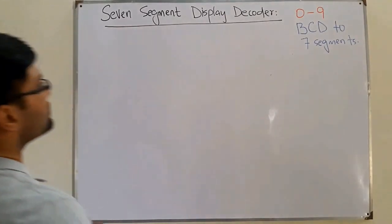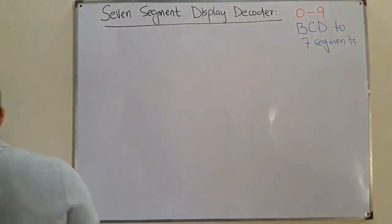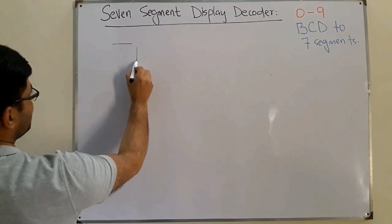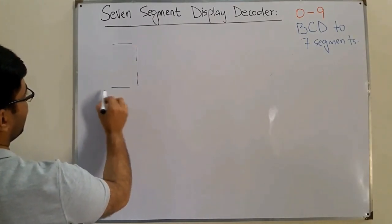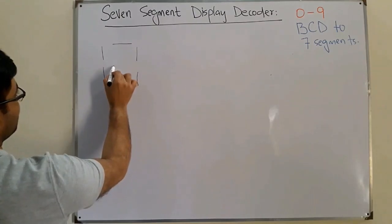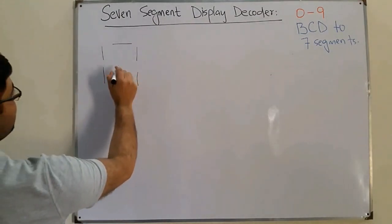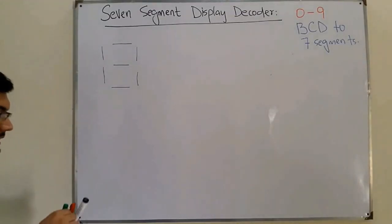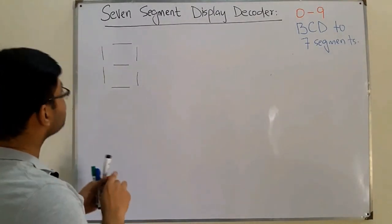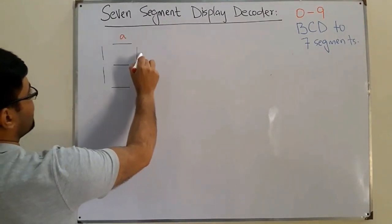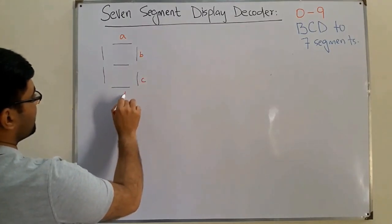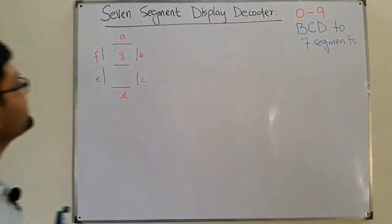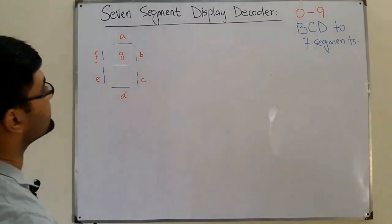Let me show you the seven segments. We have one, two, three, four, five, six, and seven — these are the seven segments of this seven segment display, which are named as a, b, c, d, e, f, and g.